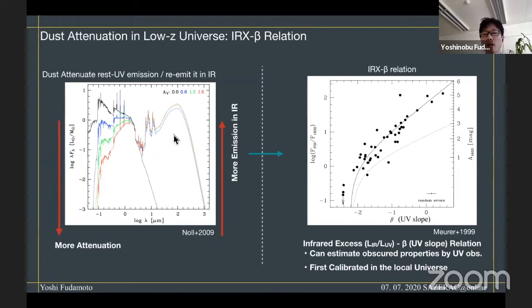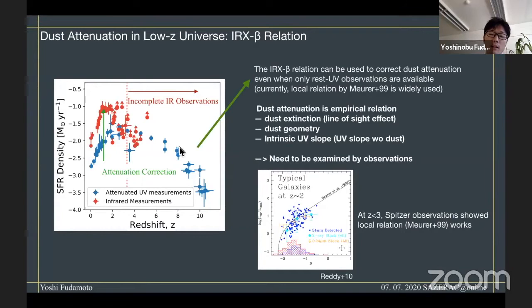This correlation between dust attenuation and emission can be translated into the so-called IRX-beta relationship. This is the relation between the UV spectral color and the y-axis is the emission in the far-infrared. This relation is very useful, in particular for estimating the dust attenuation correction in the very high-redshift universe. For instance, if we observe a galaxy at redshift greater than 7, in the typical case we only have the rest-frame UV photometry. Even in this case, using the IRX-beta relationship and UV spectral slope measurement, we can estimate the dust attenuation correction and even the infrared luminosity of these galaxies.